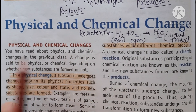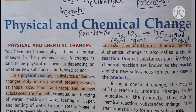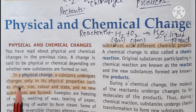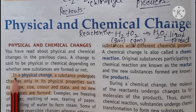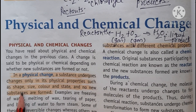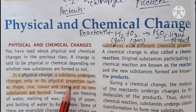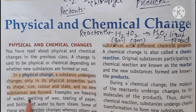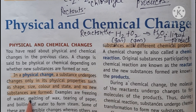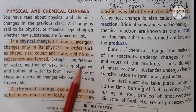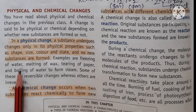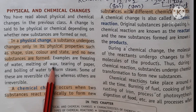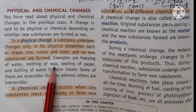Physical changes are those changes in which only the physical properties of a substance change - like change in shape, size, color, or state (solid, liquid, and gas) - and there is no formation of a new substance. For example, freezing of water: ice can be converted back to water. Melting of wax: when wax melts and is solidified again, it comes back in the form of wax.